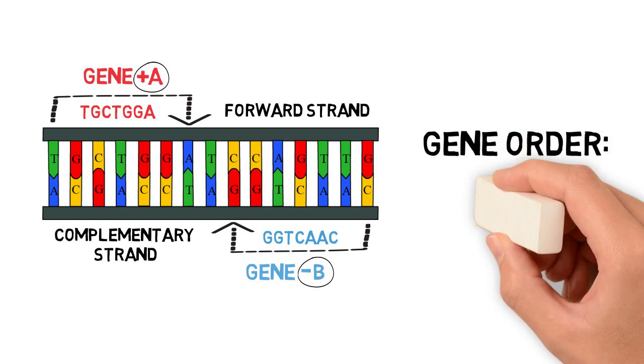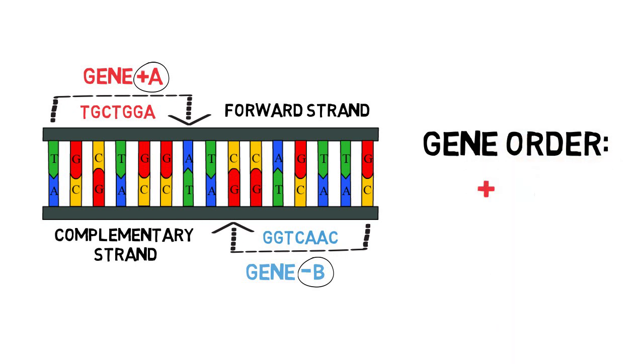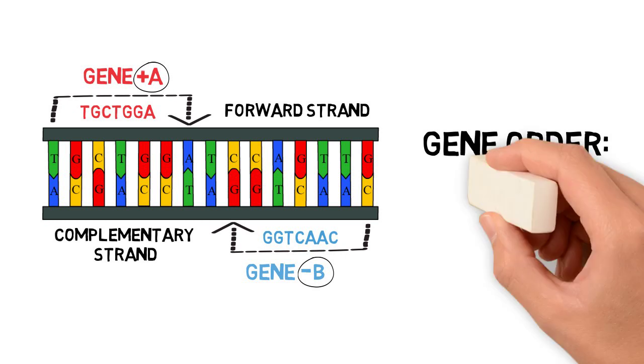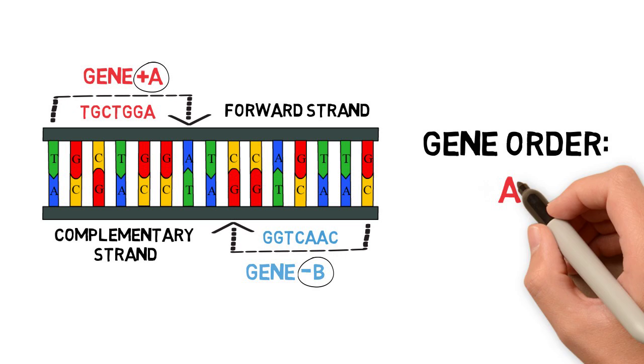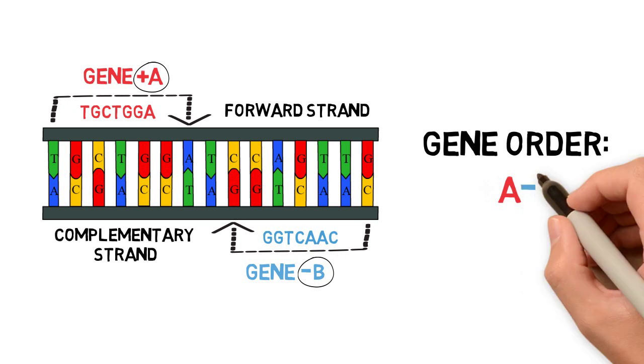We can also represent the gene orientations in gene orders. Genes that are on the forward strand are going to have a plus sign, which is sometimes omitted. And genes that are on the complementary strand, so in the reverse orientation, are going to have a minus sign.